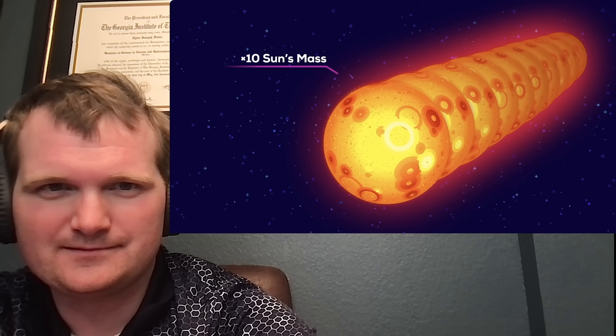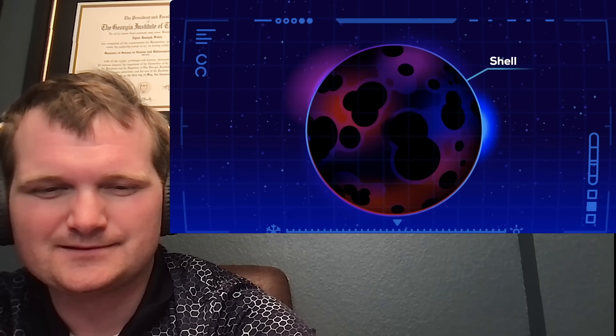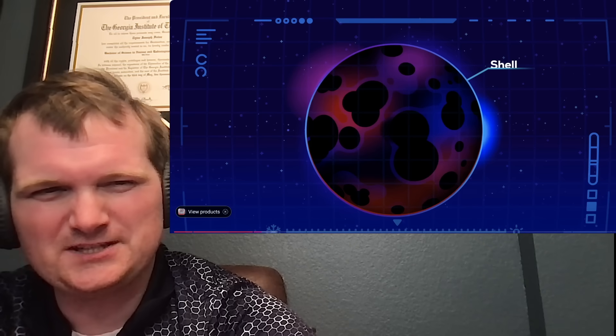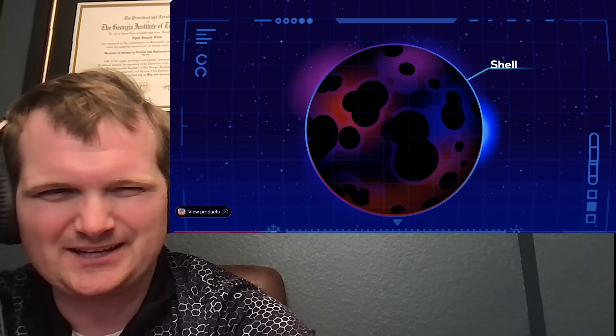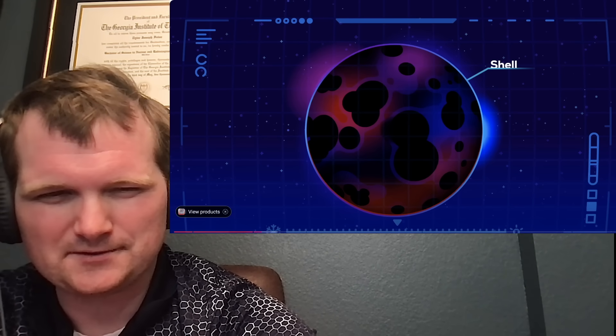Just like black holes, a gravistar can have any mass. But a typical one would be about the size of the London metropolitan area and as massive as 10 suns. The shell of the gravistar is utterly dark. So, comparable-ish to a neutron star based on size and mass, though I guess maybe smaller by a little bit.